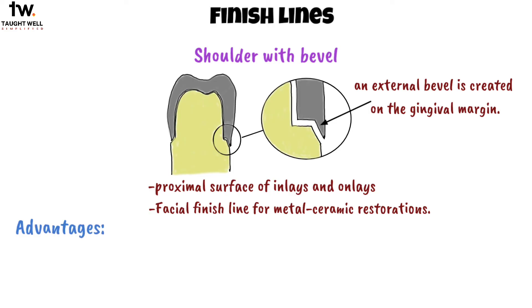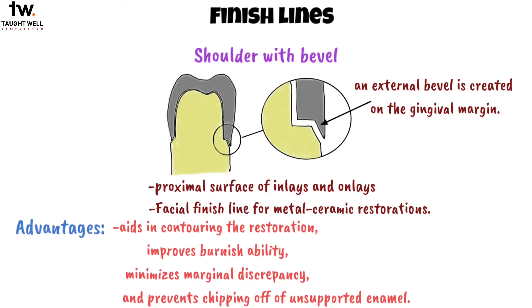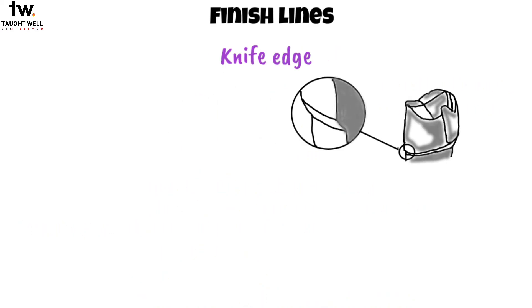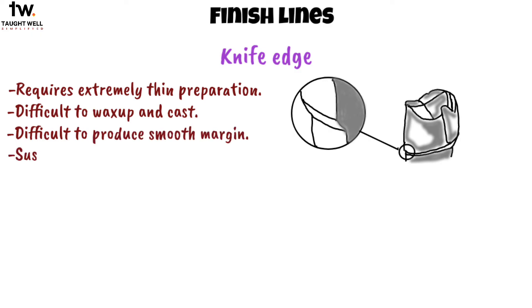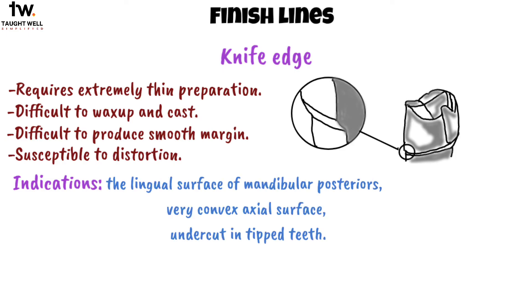Advantages of the shoulder with bevel margin are that it aids in contouring the restoration, improves burnishability, minimizes marginal discrepancy, and prevents chipping off of unsupported enamel. Next is knife edge. It requires extremely thin preparation and is difficult to wax up and cast. It is difficult to produce a smooth margin and susceptible to distortion. It is indicated in the lingual surface of mandibular posteriors, very convex axial surfaces, and undercuts in tipped teeth.